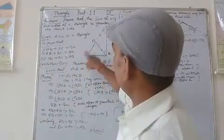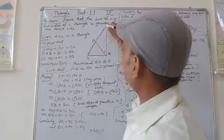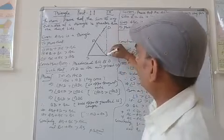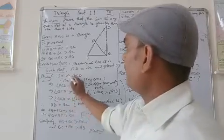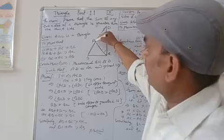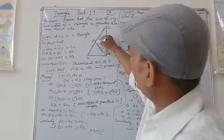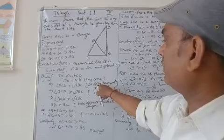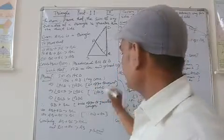We extend side BC to a point D such that AD equals AB. By construction, angle ACD is equal to angle ADC, being opposite angles to the equal sides.